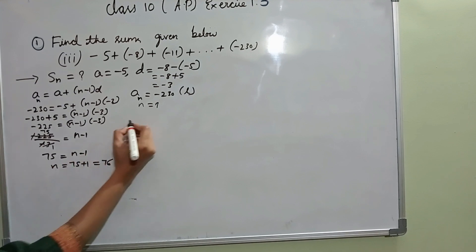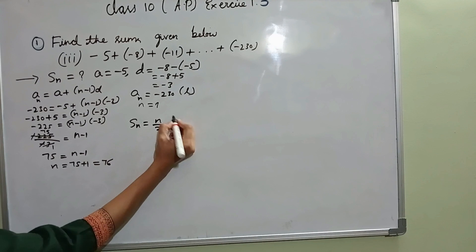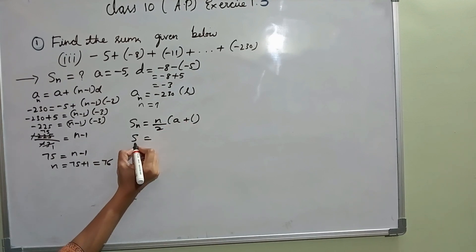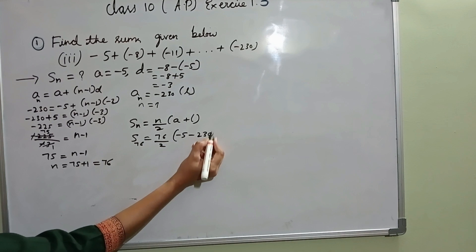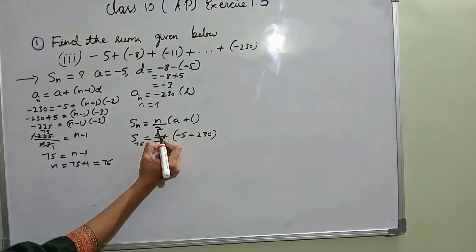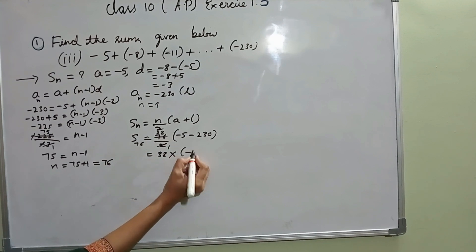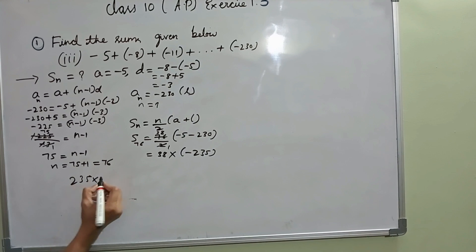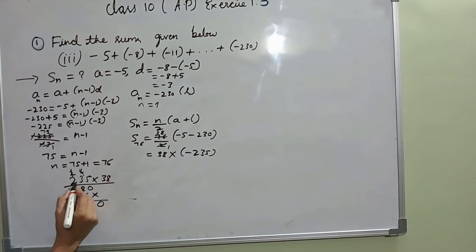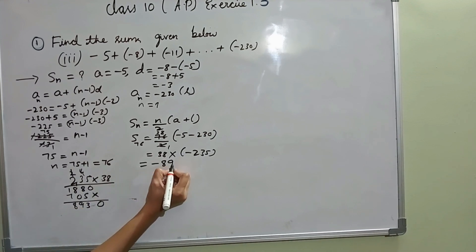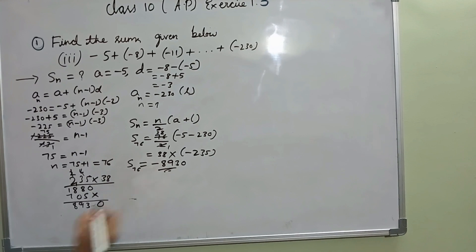Now I know N. I can find SN using formula N by 2 into A plus L. 76 by 2 is 38. A is minus 5, last term is minus 230. 38 into minus 5 plus minus 230 is minus 235. Working out 38 into 235: 8 fives are 40, 8 threes are 24 plus 4 is 28, 8 twos are 16 plus 2 is 18; then 3 fives are 15, 3 threes are 9 plus 1 is 10, 3 twos are 6 plus 1 is 7. Total 8930. So SN is minus 8930, which is the sum of 76 terms.